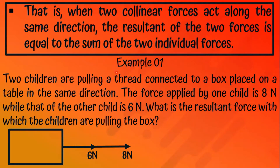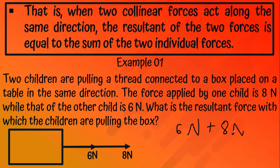Example 1: two children are pulling a thread connected to a block placed on a table in the same direction. The force applied by one child is 8 Newtons while that of the other child is 6 Newtons. Since the resultant equals the sum of the two individual forces: 6 N + 8 N = 14 Newtons.